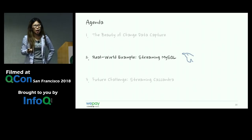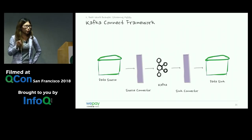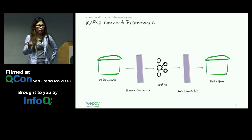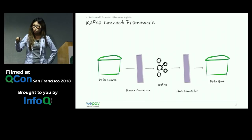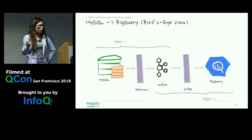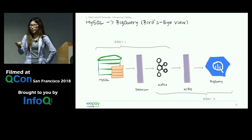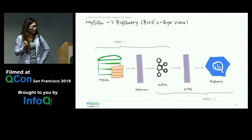Now let's look at how we use CDC at WePay to stream data from MySQL into BigQuery. Under the hood, we use the Kafka Connect framework. The source connector gets data from external sources and publishes to Kafka; the sink connector reads from Kafka and stores to external sinks. Our source data is MySQL, our sink is BigQuery, our source connector is Debezium (an open source project), and our sink is KCBQ — Kafka Connect BigQuery — which we built and named ourselves.